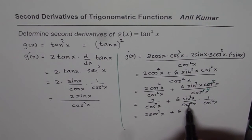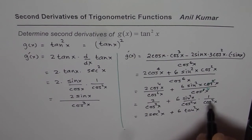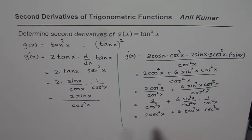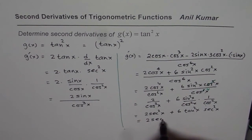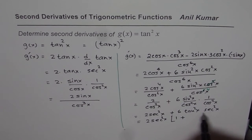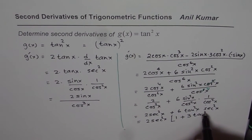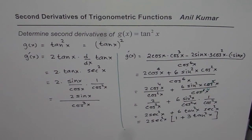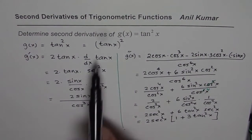Sin over cos is tan square x, and tan square x times secant square x. Now, 2 secant square x is a common factor. Taking it out, we are left with 1 plus 3 — that is 6 divided by 2 equals 3 — times tan square x. So that becomes the second derivative of the given function.